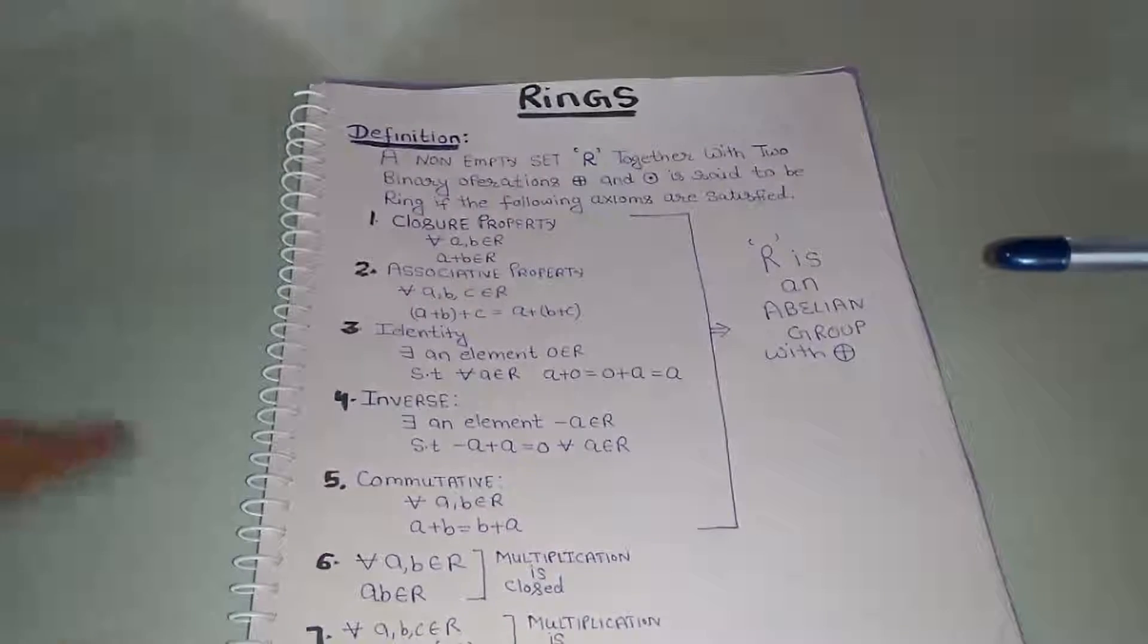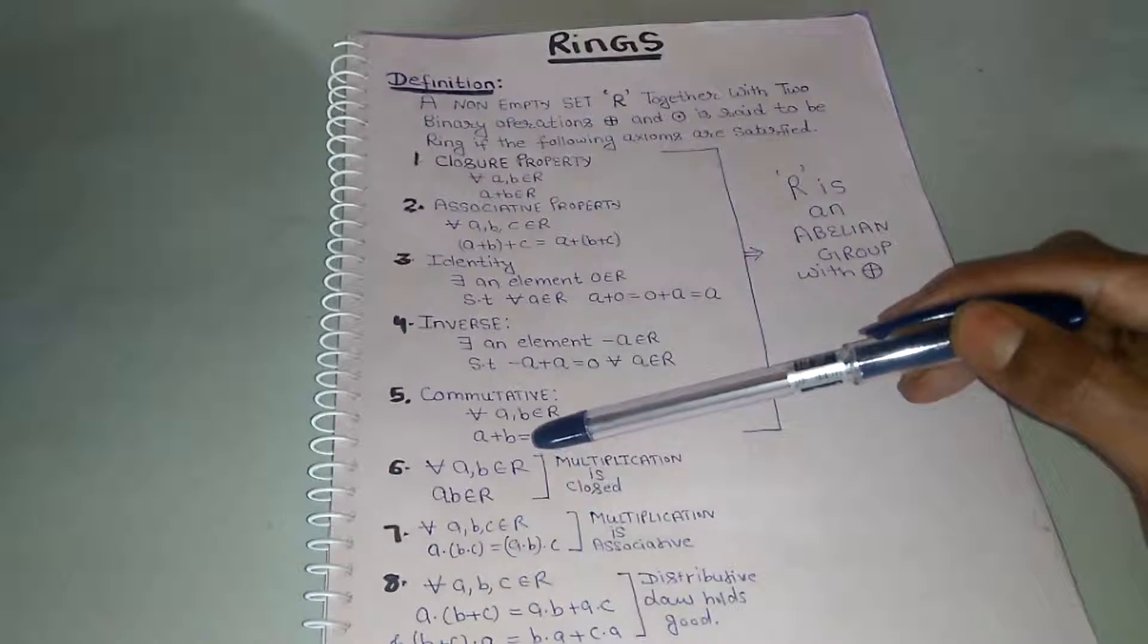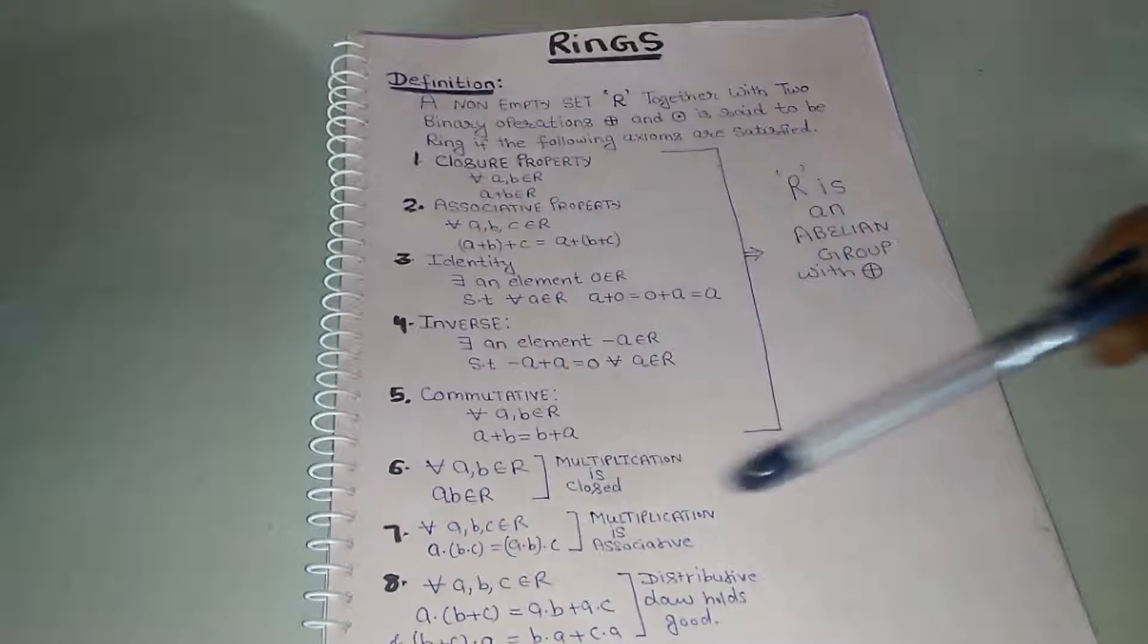Now we have three more. Sixth one is: for all A, B belongs to R, A dot B must belong to R, it means multiplication is closed.